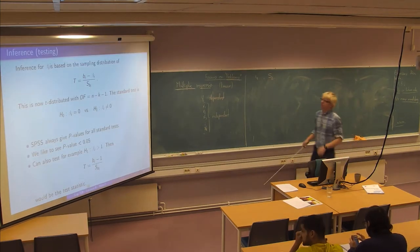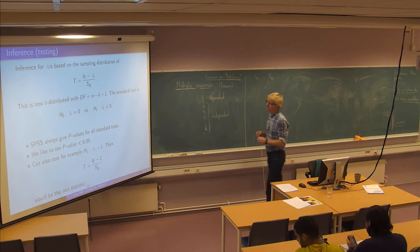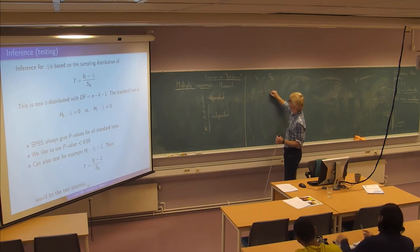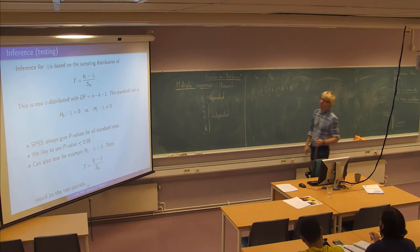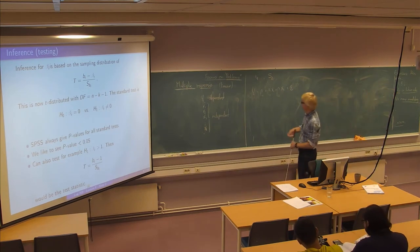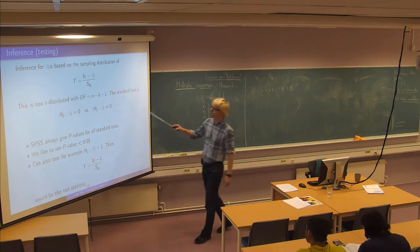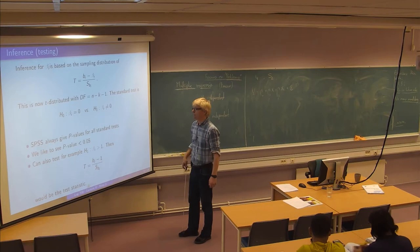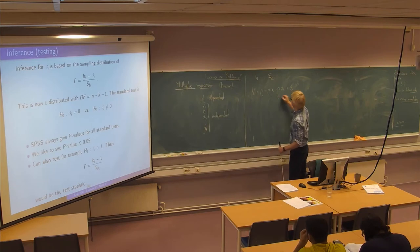So we're basically talking about inference and testing. You remember the model says Y is assumed to be maybe a linear function of two or more X variables. And then we always want to test whether these beta eyes are different from zero. So this is what we call the standard test. Can we reject these hypothesis in favor of this one? This is what we say we measure the significance of X1 and X2 variables.